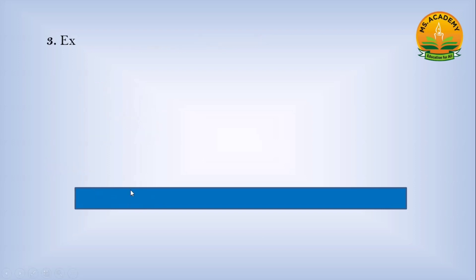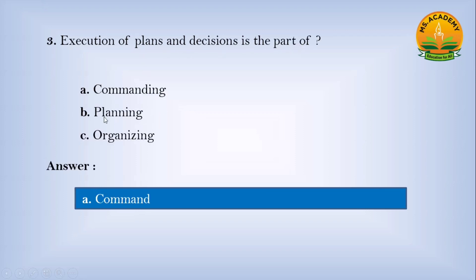Execution of plans and decisions is the part of: Option a) Commanding, Option b) Planning, Option c) Organizing. Answer: a - Commanding.